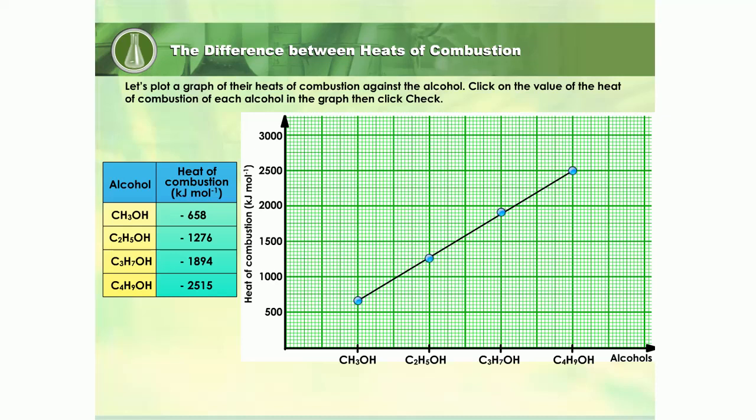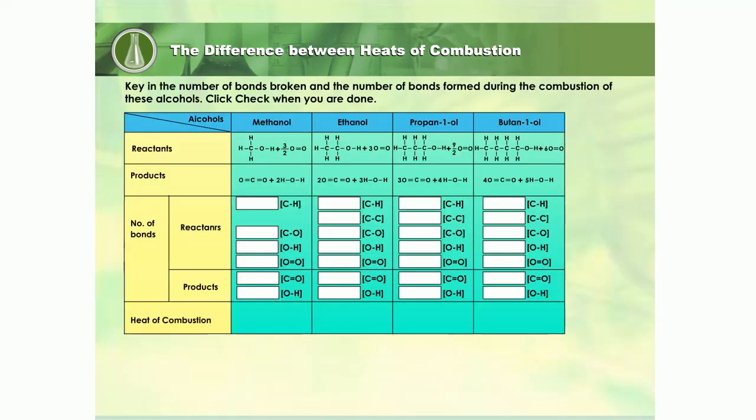Let us calculate. These are the reactants and products of combustion of the four alcohols. Complete the table to find out how many CH, CC, CO, OH, and OO double bonds are broken, and how many OH and CO double bonds are formed during their combustion. What can you say about the number of bonds broken and formed as you go down from methanol to butane-1-ol?